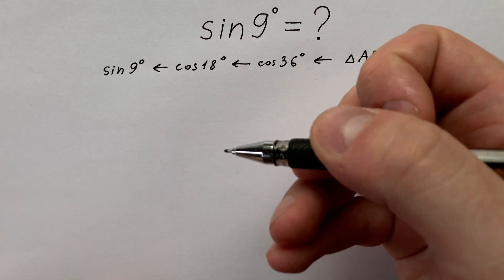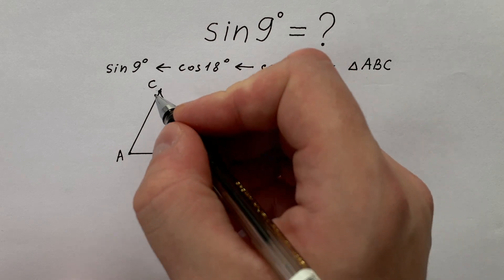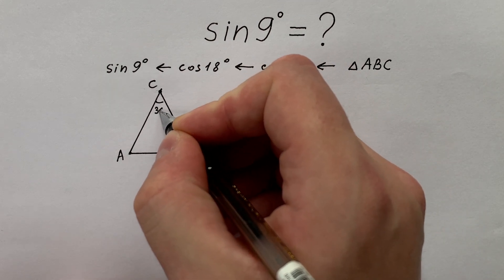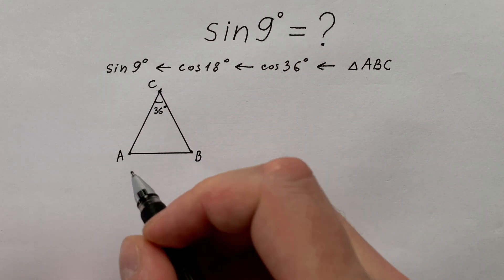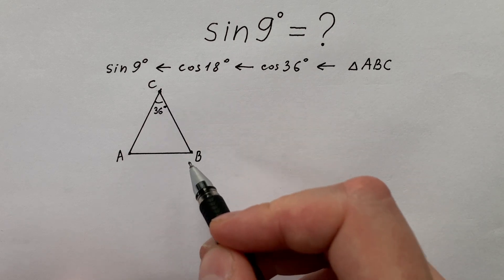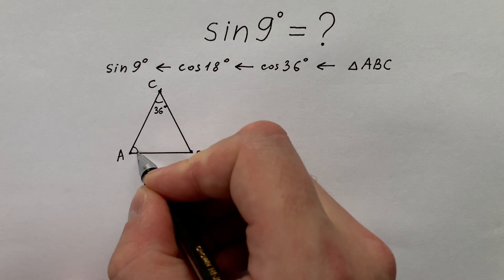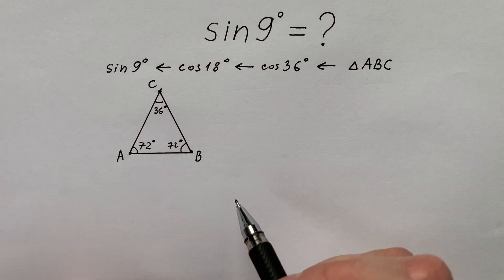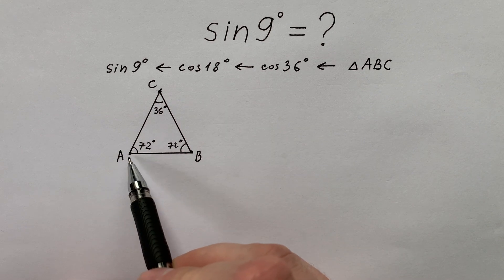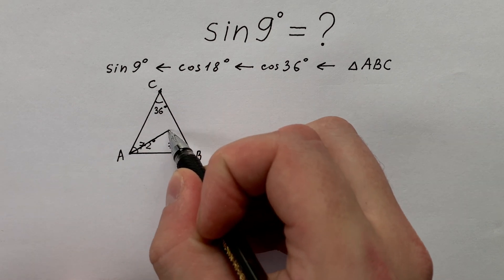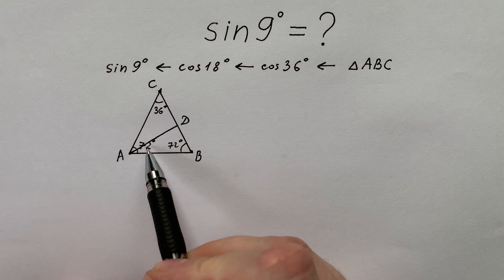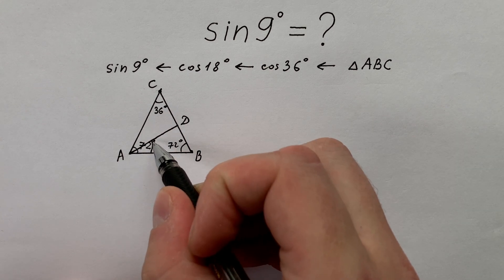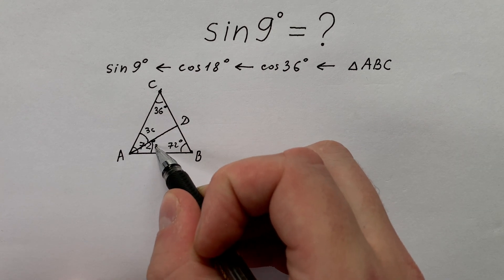Let's draw this triangle. Let angle C equal 36 degrees. In this way, as we know that AC is equal to CB, angles A and B are equal to 72 degrees. And now let's hold a bisector of angle B. It divides angle A into two angles, each of them equals 36 degrees.